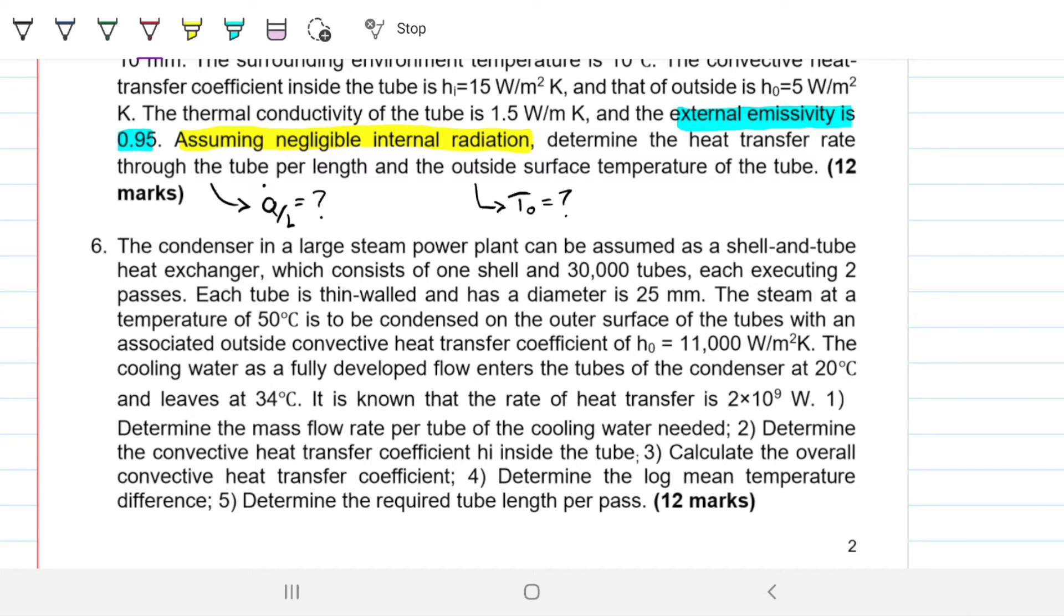The problem statement reads, The condenser in a large steam power plant can be assumed as a shell and tube heat exchanger, which consists of one shell and 30,000 tubes, each executing two passes. Each tube is thin-walled and has a diameter of 25 millimeters. The steam at a temperature of 50 degrees Celsius is to be condensed on the outer surface of the tubes with an associated outside convective heat transfer coefficient of 11,000.